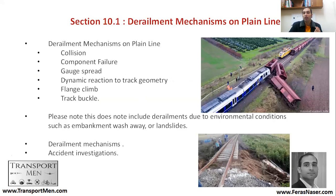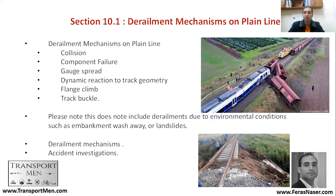Let us have a look at derailment on plane lines. There are many types of derailment on plane lines. One of the famous ones is collision, and this is a very rare accident — to have two trains hitting each other. This most probably results from a signaling or train control system failure, where either the driver did not interact with the signaling system or the train control system had a fault, resulting in a head-to-head collision.